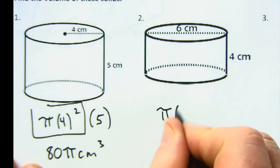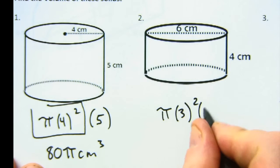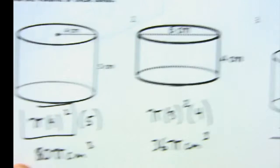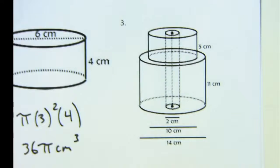Here it's pi r is 3 this time, times 4, we get 9 times 4 is 36 pi centimeters cubed.